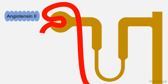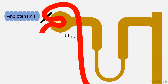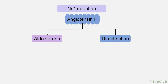The second direct effect of angiotensin II is hemodynamic and requires understanding of Starling forces at the peritubular capillary. Angiotensin II constricts the efferent arteriole. This brings about two changes in hemodynamics of the peritubular capillary: first, it decreases hydrostatic pressure in peritubular capillaries; second, it increases filtration fraction so colloid osmotic pressure in the peritubular capillary increases. Both of these changes cause an increase in uptake of reabsorbate from the interstitium into the capillary, which in turn increases reabsorption of sodium and water from the tubule. These are the ways by which angiotensin II causes sodium retention.